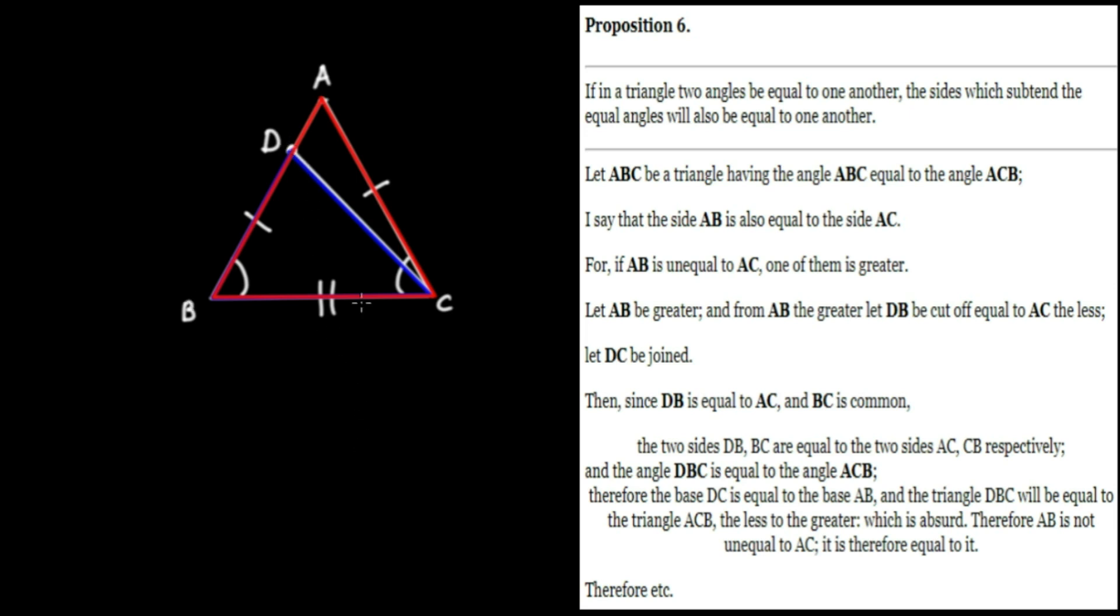Hence, the triangle D, B, C, which is less, is equal to the greater A, B, C, which Euclid says is absurd. This contradicts common notion number 5, which says that the whole is greater than the part.